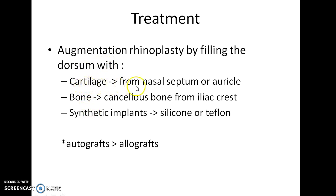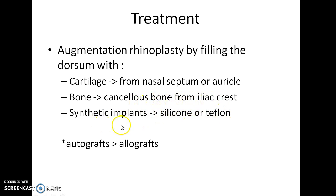Cartilage is taken from the nasal septum or auricle. In case of defects in the bone, bone is harvested from the cancellous part of the iliac crest. Silicone or Teflon implants can also be used. Always remember that in case of grafts of bone or cartilage, autografts are better than allografts.